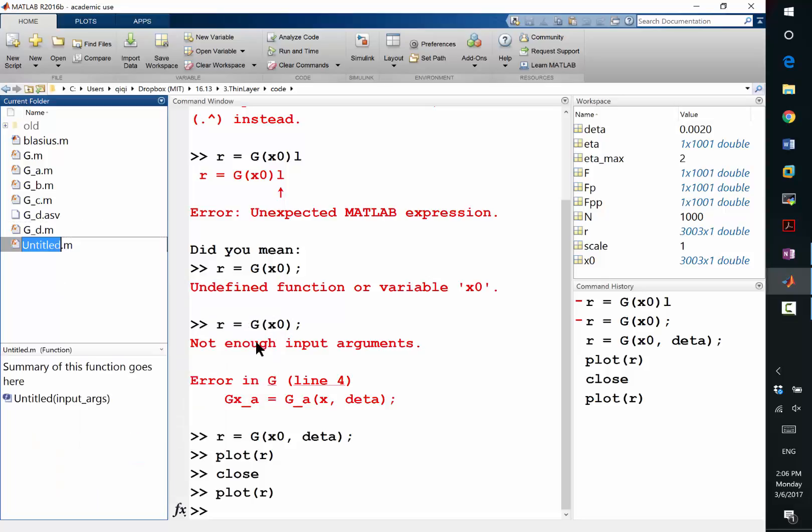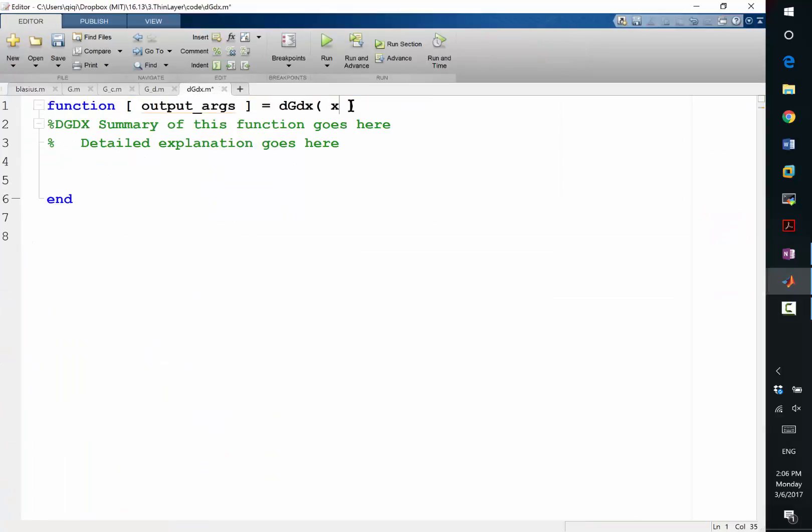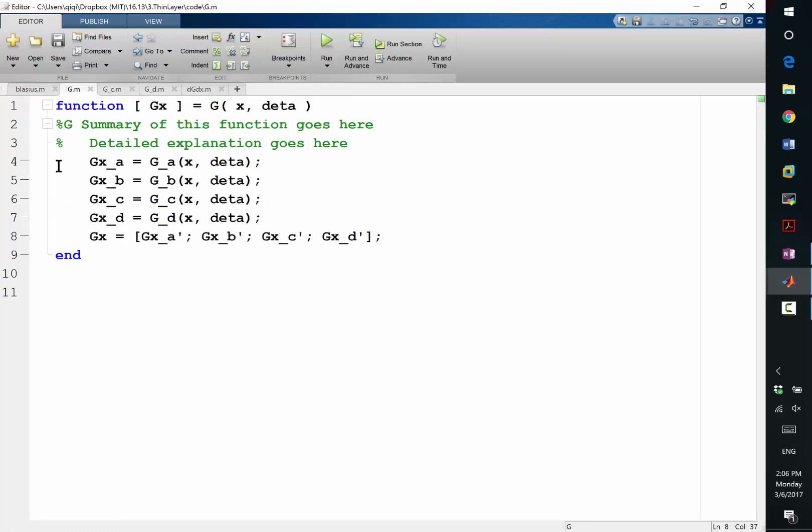So function, let's code dgdx. Alright, so dgdx, it should also take x and eta, and it should compute dgdx of x. So let's take a look at what this function g does, and let's figure out how to compute the derivative of this.